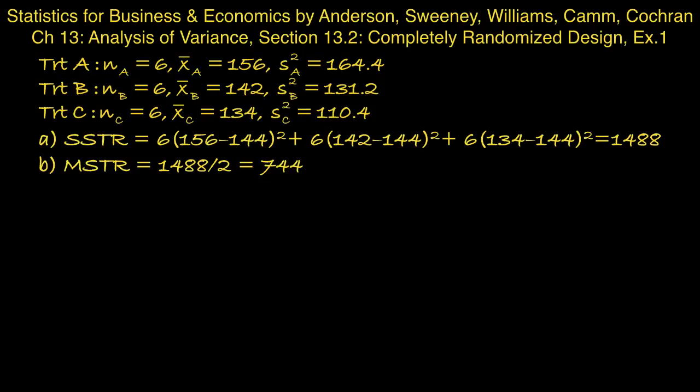Part C, compute the sum of squares due to error. So we use the formula provided in the textbook and find that the sum of squares due to error is 2030.